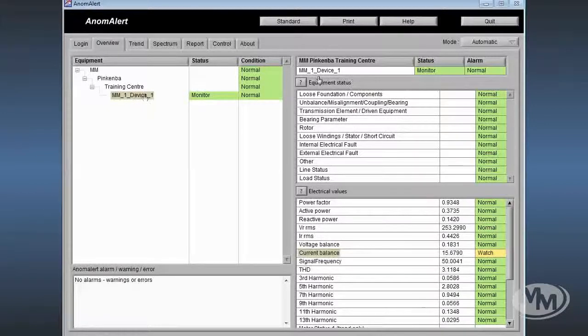To the right hand side of this window, we can see a summary of the equipment status and a summary of the electrical values.